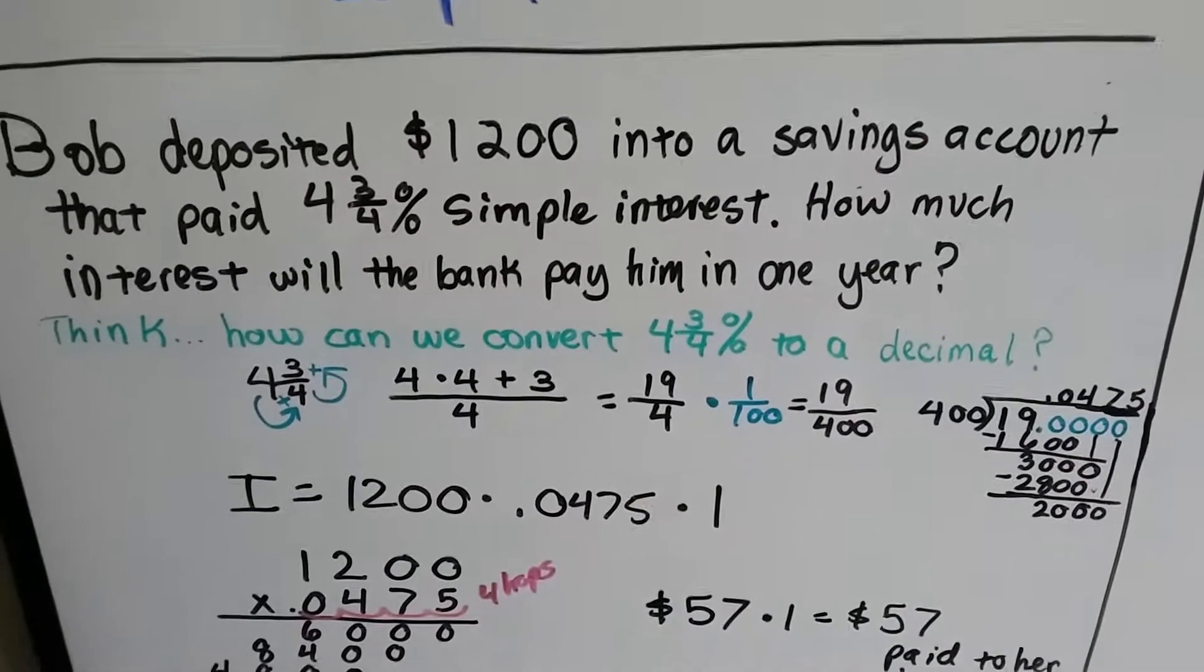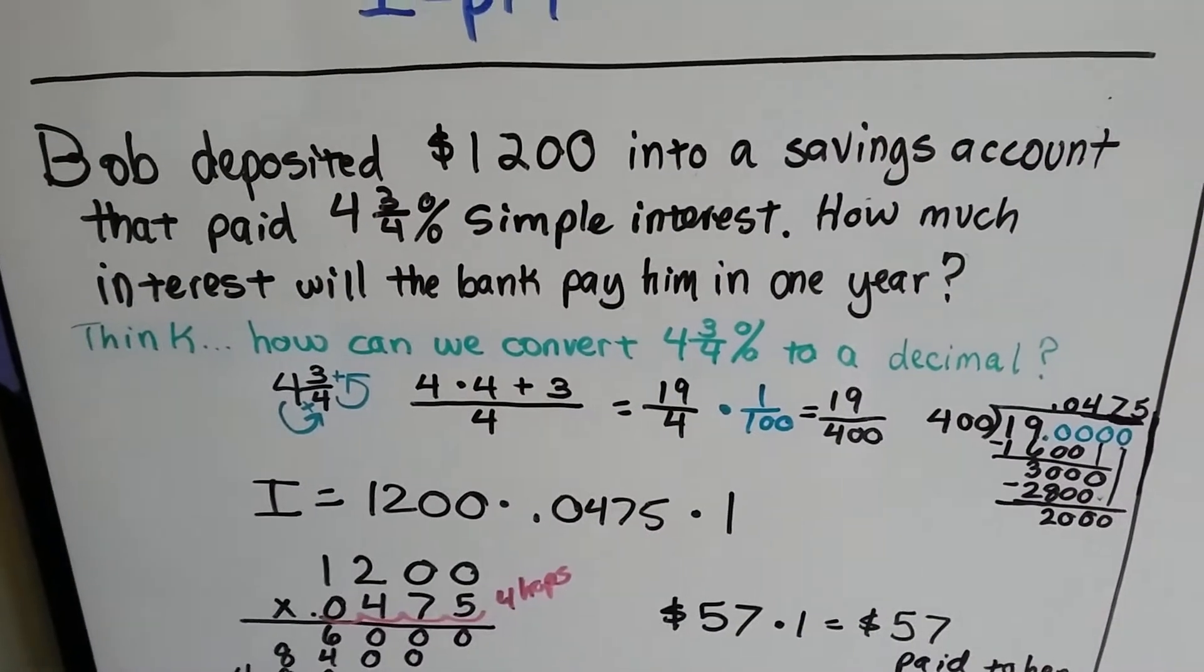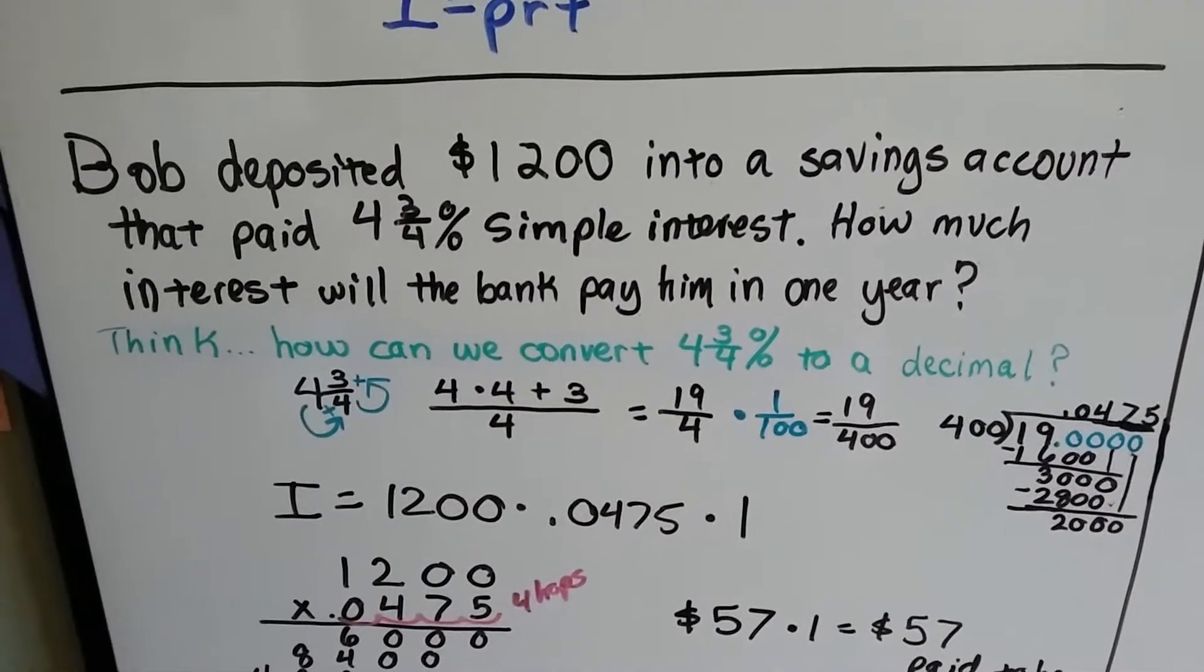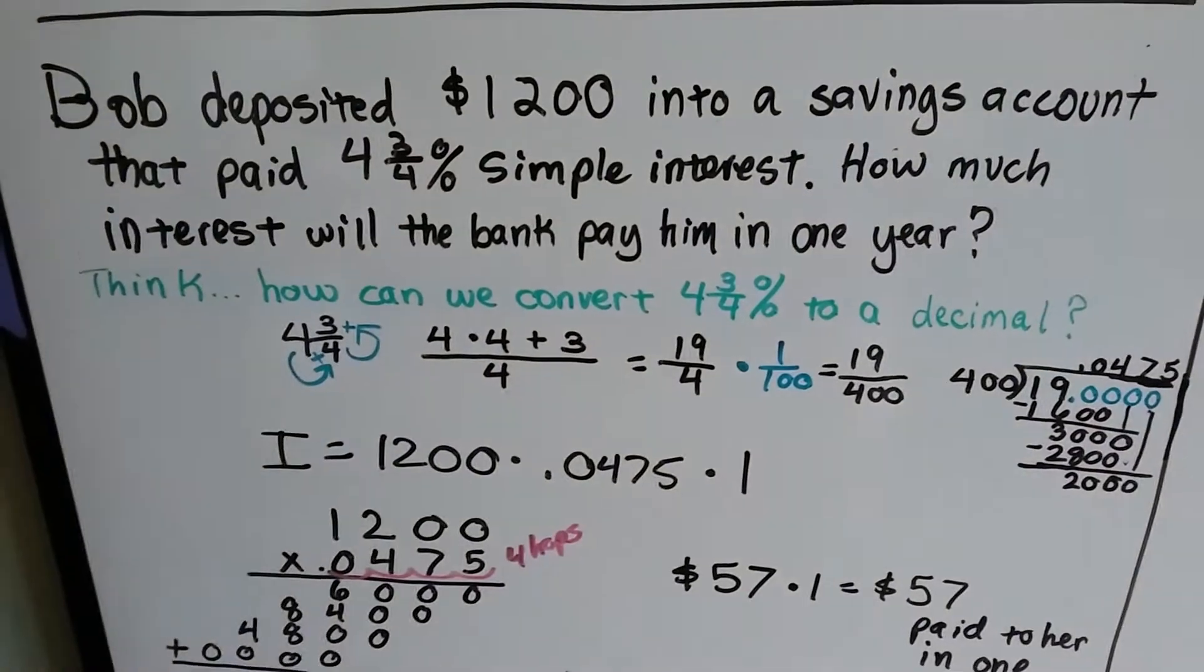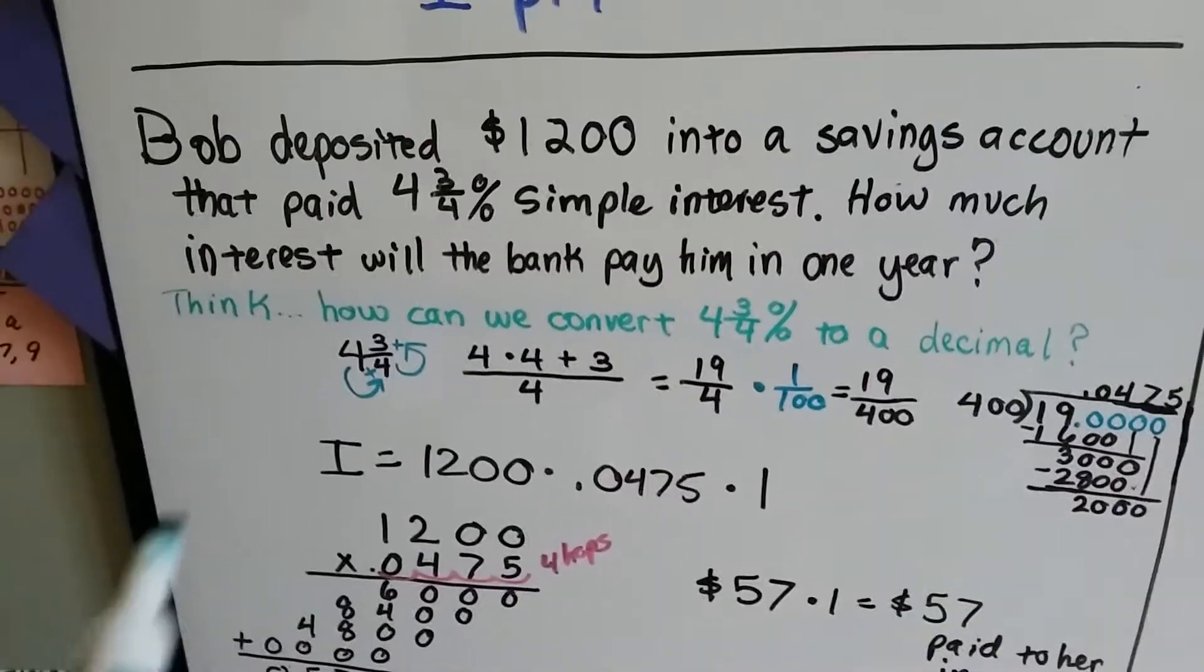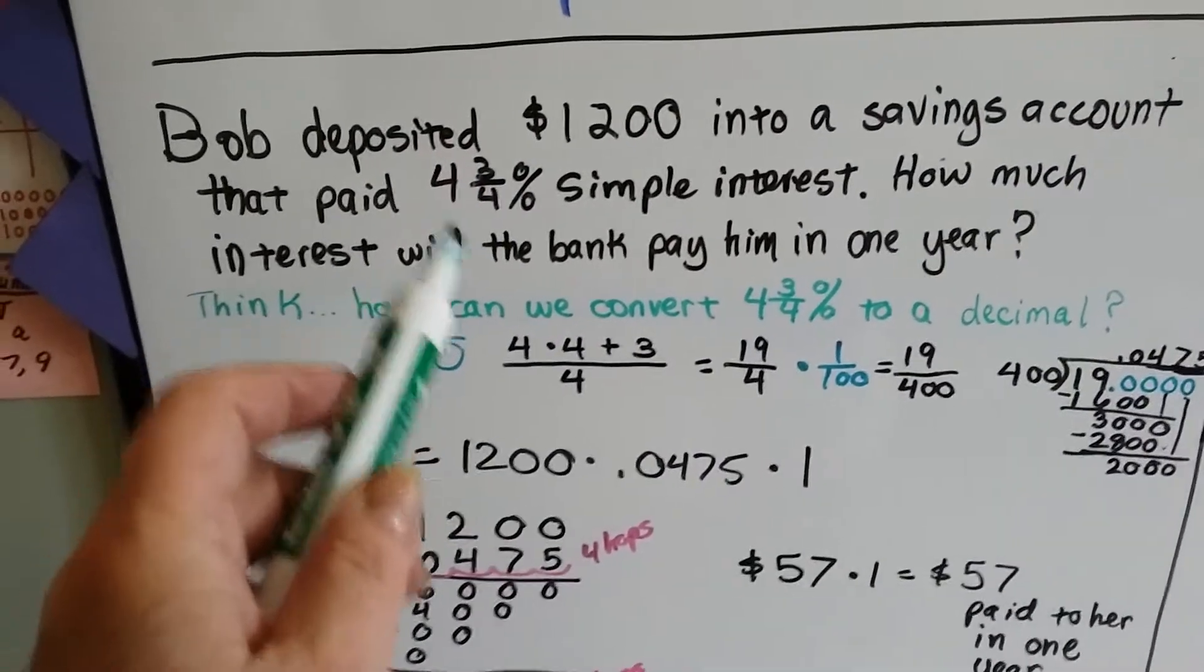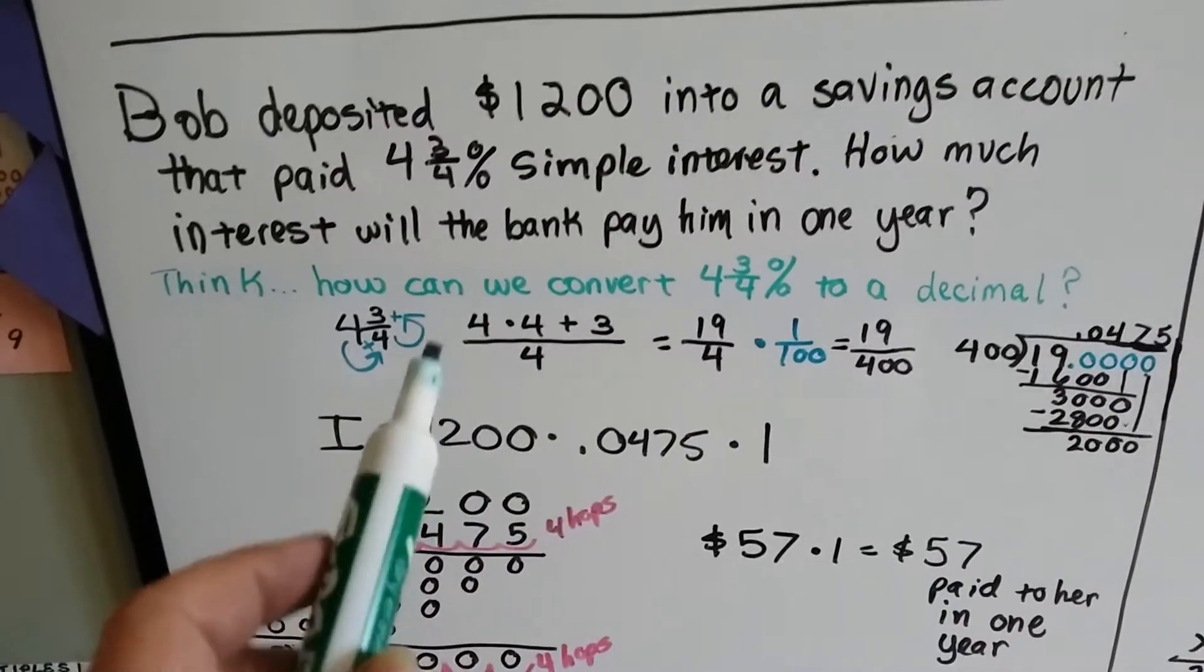So Bob deposited $1,200 into a savings account that paid 4¾% simple interest. How much interest will the bank pay him in one year? Think, how can we convert 4¾% to a decimal so that we can plug it into the formula?